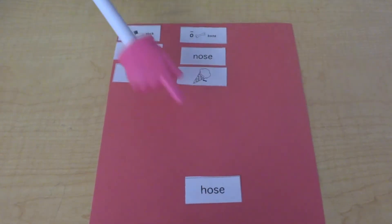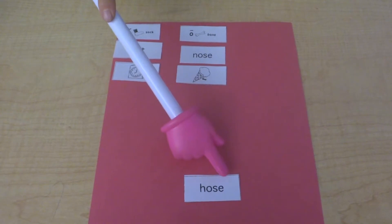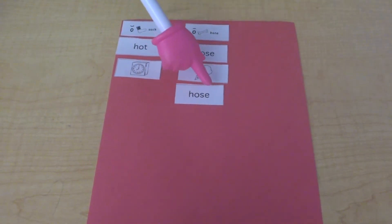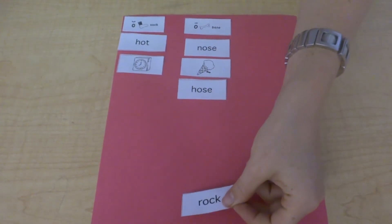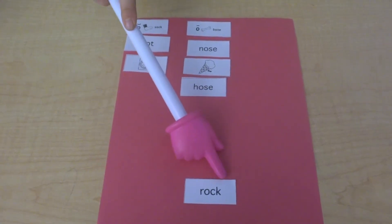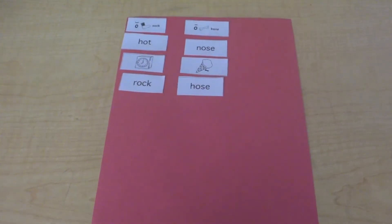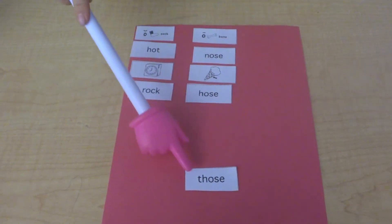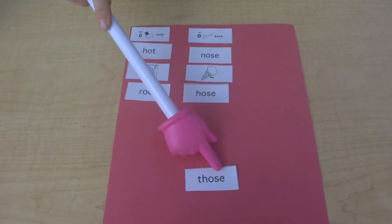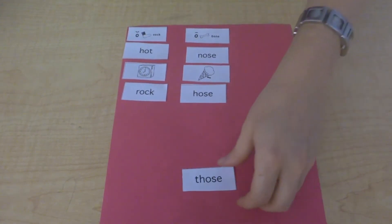Tell me the sounds of hose: h-oh-z. What do you hear — 'ah' or 'oh'? That one letter is saying 'oh' because of that 'e' at the end. This word is rock. Tell me the sounds of rock: r-ah-k. Do you hear 'ah' or 'oh'? Yeah, we hear 'ah,' so rock goes in our first column. This is the word 'those.' Say: those. Tell me the sounds of those. Do you hear 'ah' or 'oh' in those?